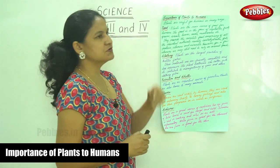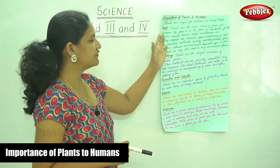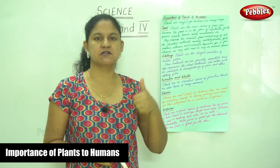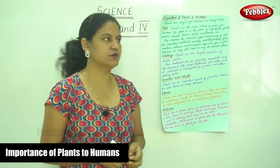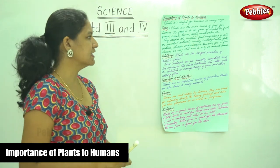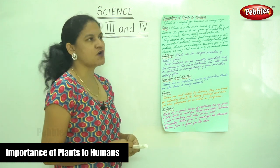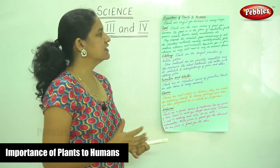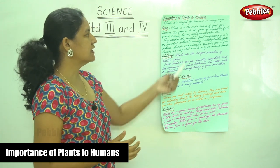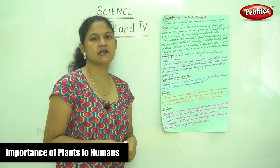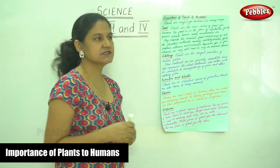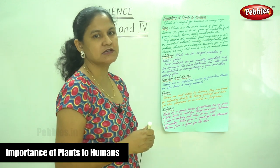Plants are useful for humans in many ways. First is food — that is the most essential part. Plants are the main source of food for humans. The food is in the form of vegetables, fruits, grains, cereals, leaves, seeds, and mushrooms. These are the parts of the plant that we eat.